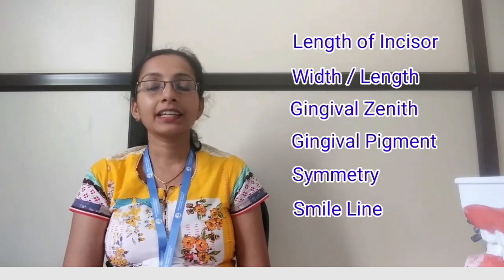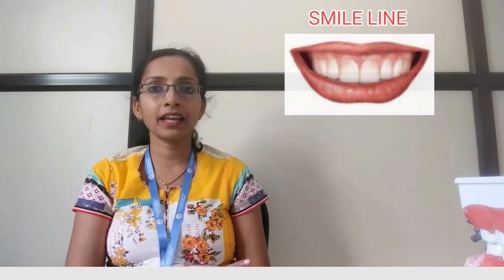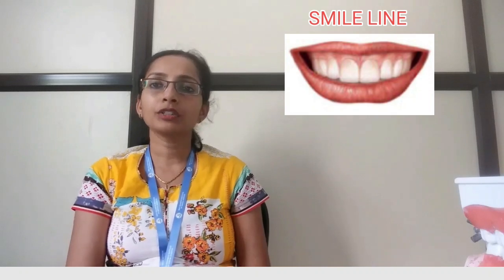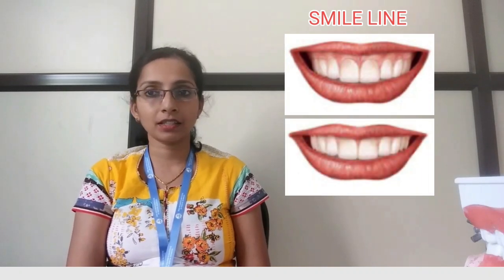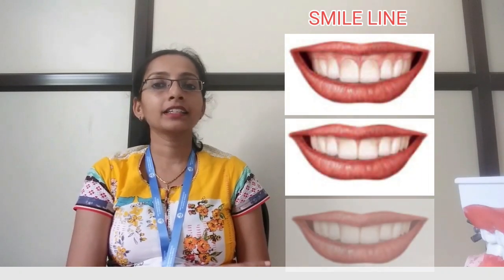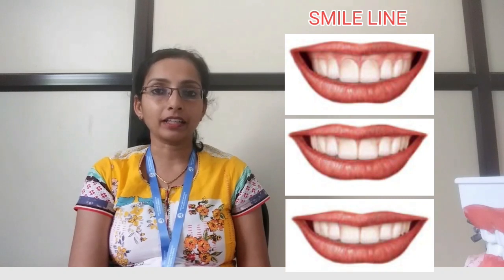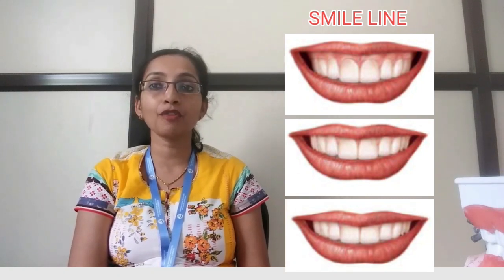The next element is the smile line. You could have a high smile line, a medium smile line — which is considered the most aesthetic — or a low smile line. These are the different types of smile lines that are elements of the aesthetic zone.